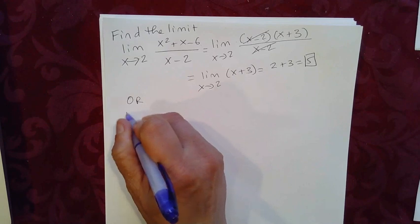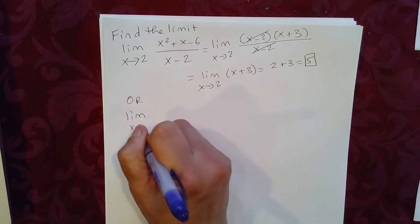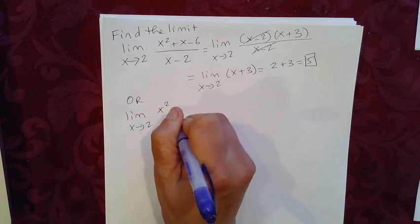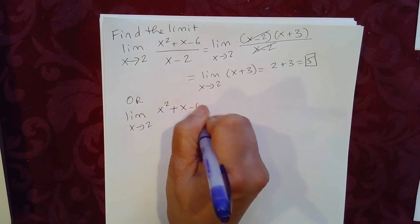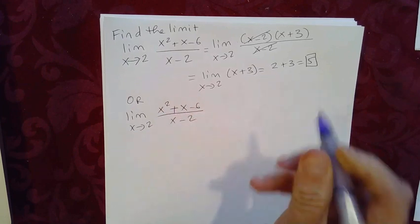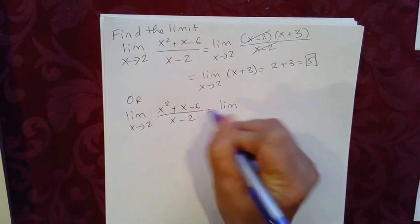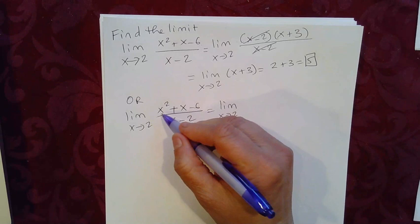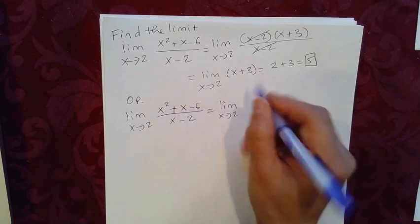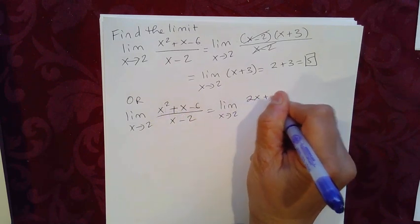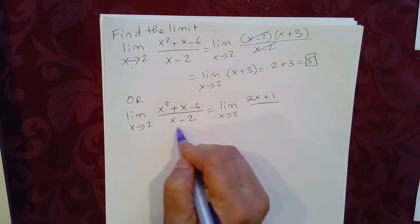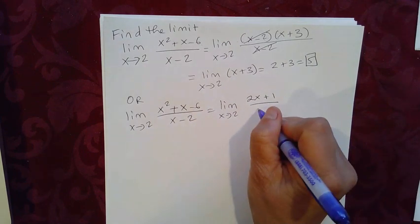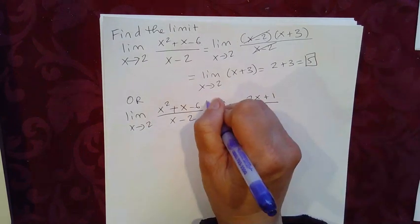So you could use L'Hôpital rule. So if you recall, we use L'Hôpital rule. We take the derivative of the numerator. The derivative of the numerator is 2x plus 1 over the derivative of the denominator, which is 1.